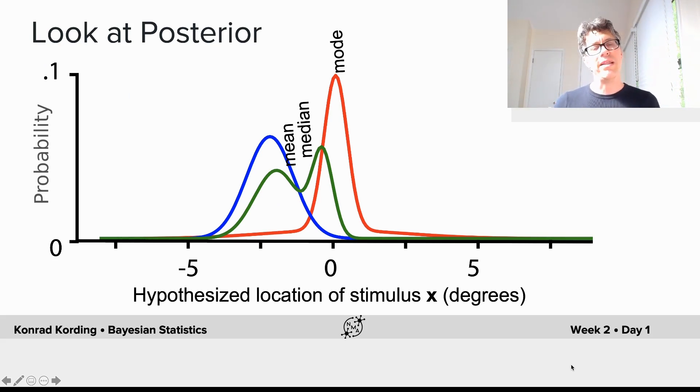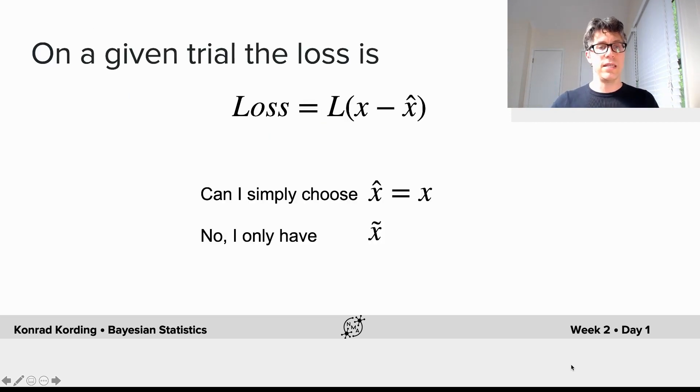There's the mode, where the green curve is highest. Is that the best estimate? It's certainly the estimate that makes it most probable we are right. But alternatively, maybe we want the median or the mean. Which one should we take? Which one we should take will ultimately depend on what our cost function is, as we will see.